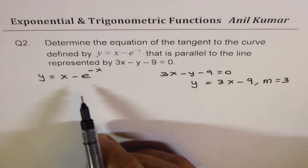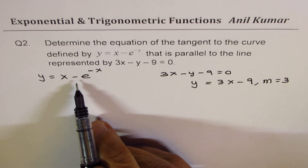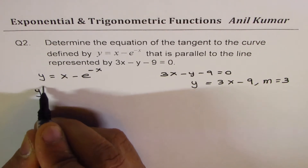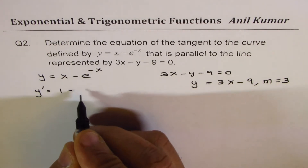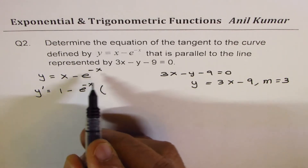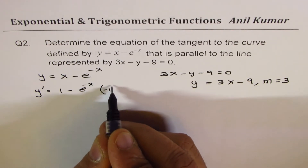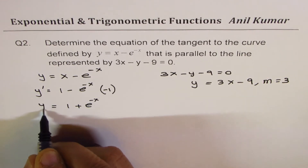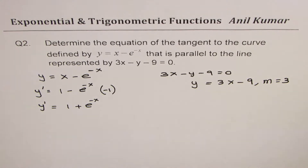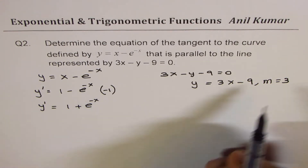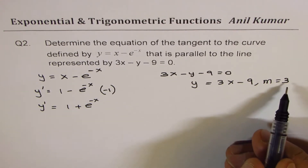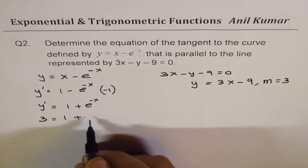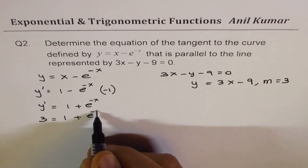We need to find the point on the curve where the slope equals 3. The derivative of the function is 1 minus e to the power of minus x times (minus 1), which simplifies to 1 plus e to the power of minus x. We set this derivative equal to 3: 1 plus e to the power of minus x equals 3.